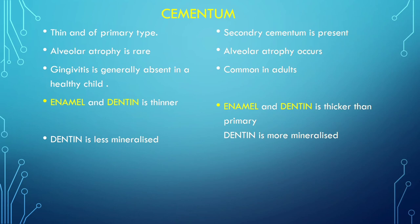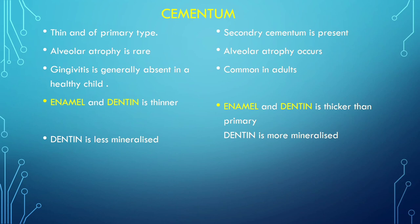Alveolar atrophy is the loss of supportive alveolar bone — when bone reduces due to tooth loss, loss of function, trauma, or reduced blood supply. In permanent dentition the bone is more mineralized. Gingivitis is basically absent in a healthy child in primary dentition, while in adults gingivitis is more common.